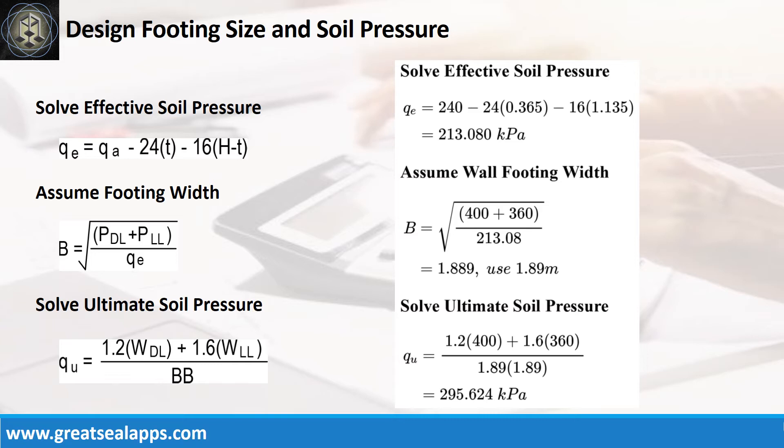Given axial dead load equals 400 kN and axial live load equals 360 kN, the footing width is 1.89 m, and the ultimate soil pressure is 295.624 kPa.